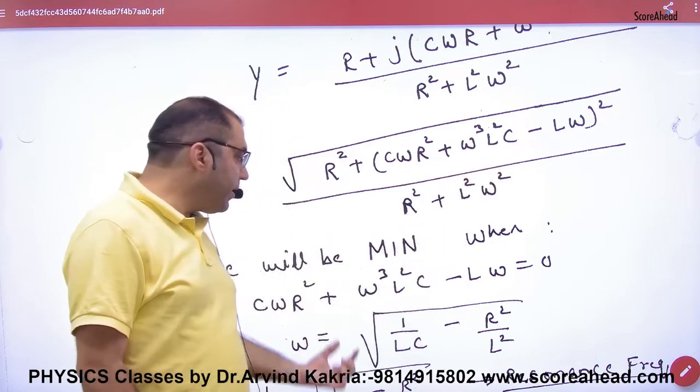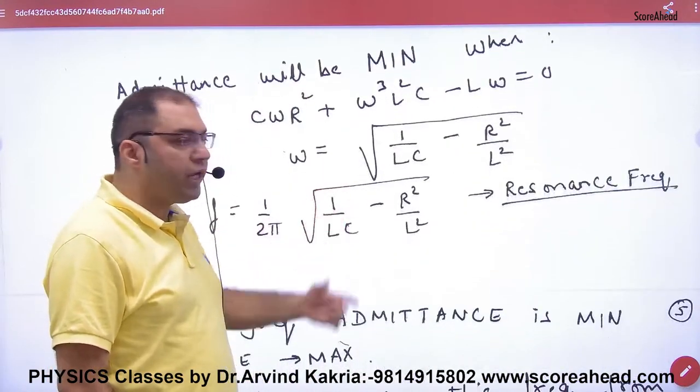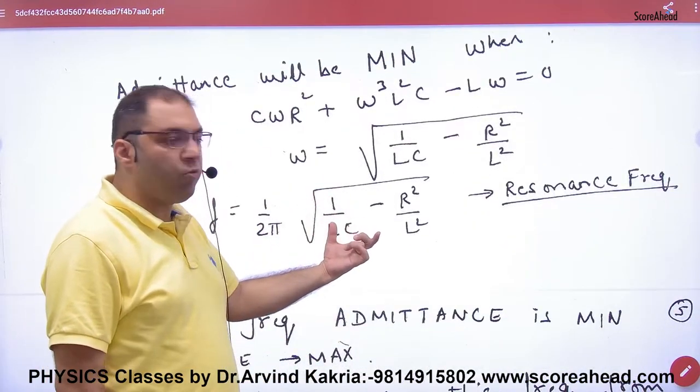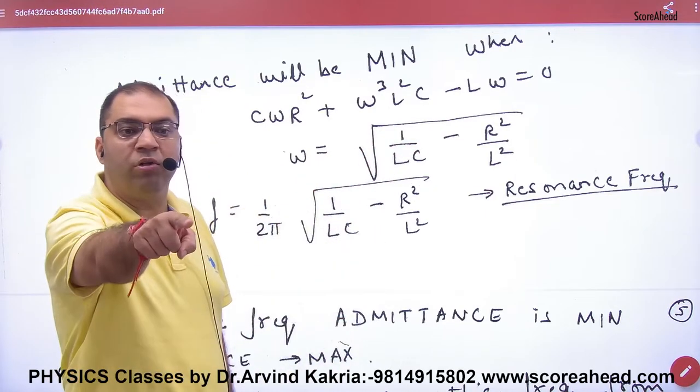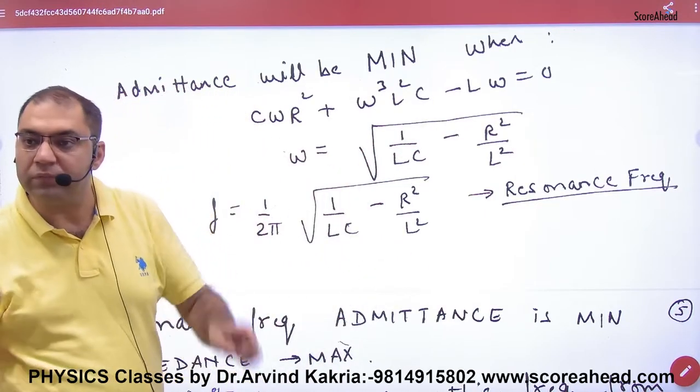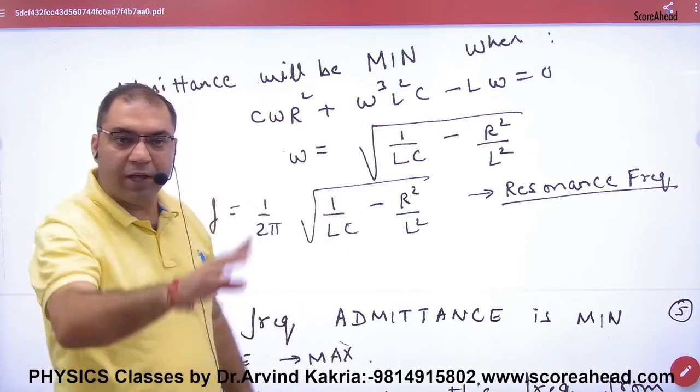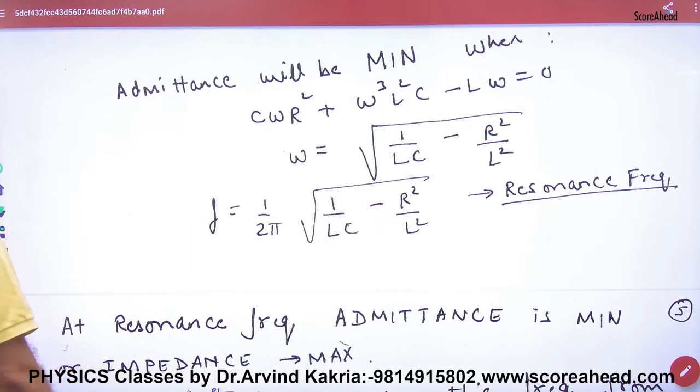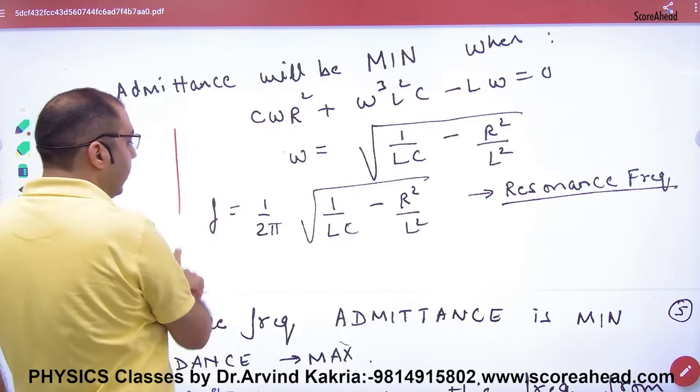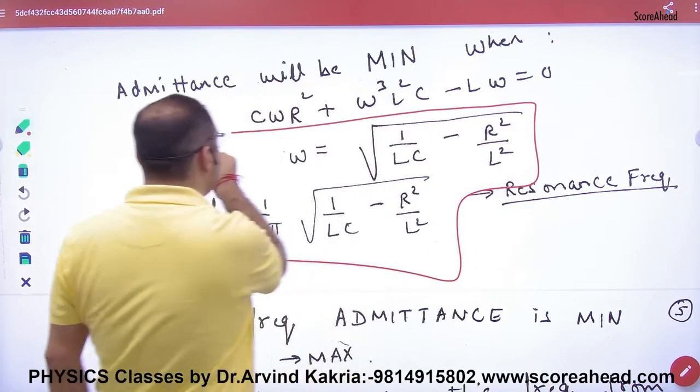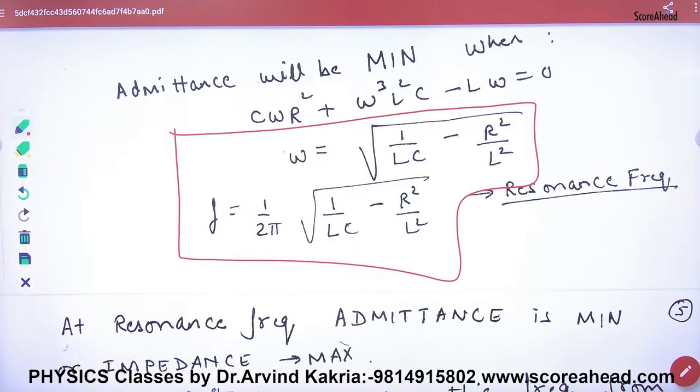To jab mein se zero put karunga, aur omega nikalunga, to yeh mere paas omega aayega, aur yeh frequency aayegi. Isko bolte hai resonance frequency. Mark karo, aapne koi theory nahi karna hai. Aapne bas yeh mark karna hai, ki omega ya frequency, yeh joh frequency ya omega, isko kya bolte hai, resonance frequency.